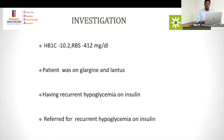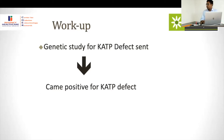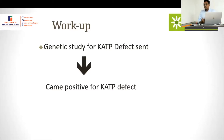HbA1c was 10.2, RBS was 412 mg/dL. The patient was on glargine and Lantus and was referred for recurrent hypoglycemia. In managing these patients, since the patient was not in DKA, you start basal insulin at a dose of 0.01 to 0.05 international units per kg. Focus on basal insulin and give reactive bolus if sugars are high.